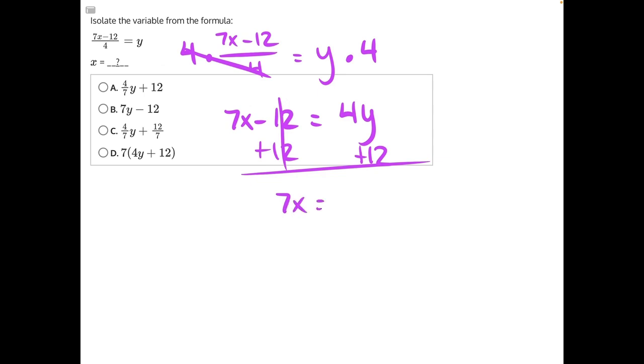leaving us with 7x is equal to 4y plus 12, and finally 7 is being multiplied to x, so the opposite operation is to divide everything by 7. These will cancel,